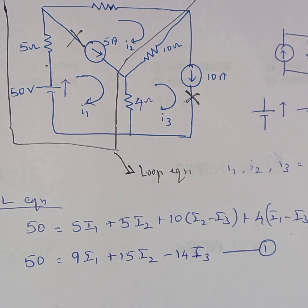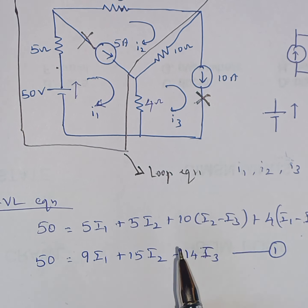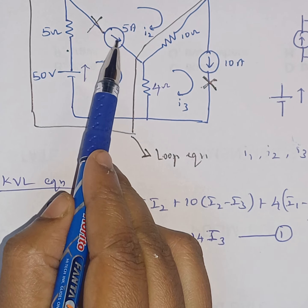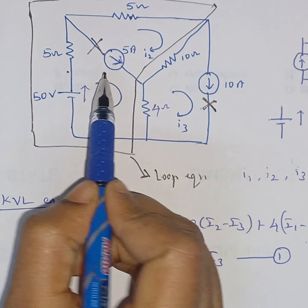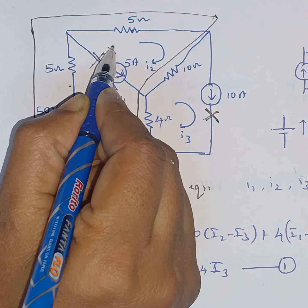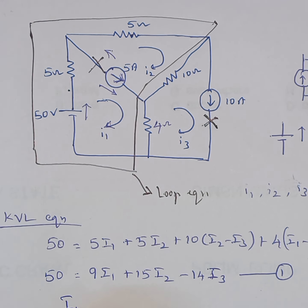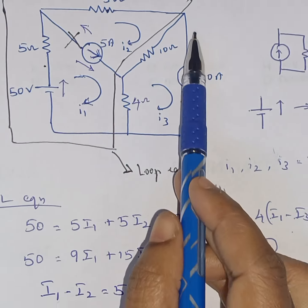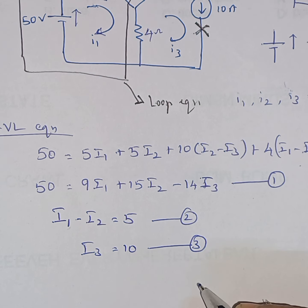Super mesh analysis is efficient because the number of equations to solve is small — here we have only one loop equation. For the current source constraints: the branch current gives I1 − I2 = 5 as the second equation. The branch with only I3 flowing through it gives I3 = 10 as the third equation.